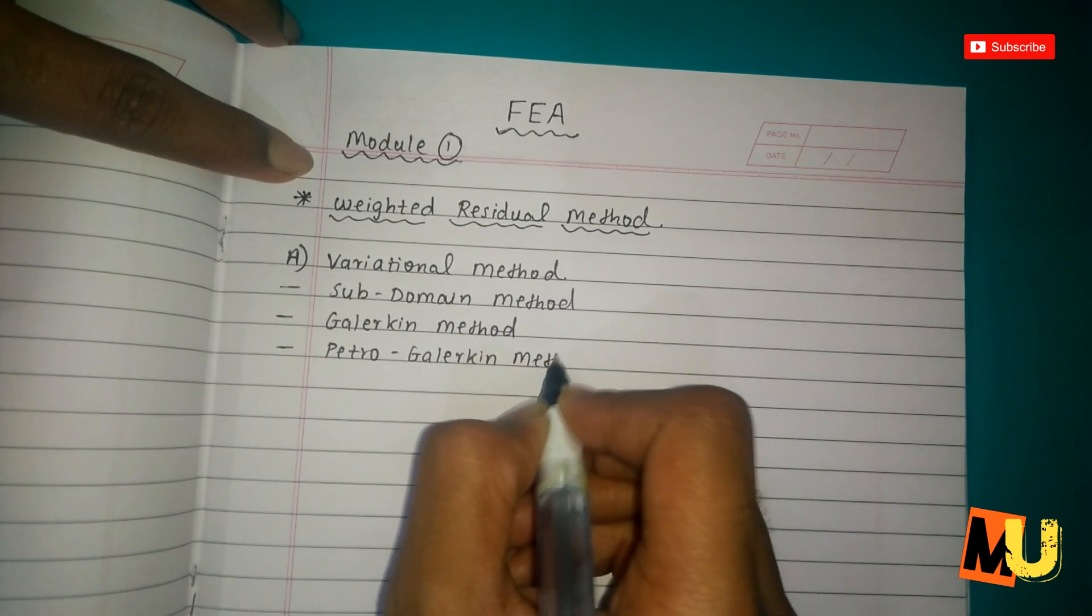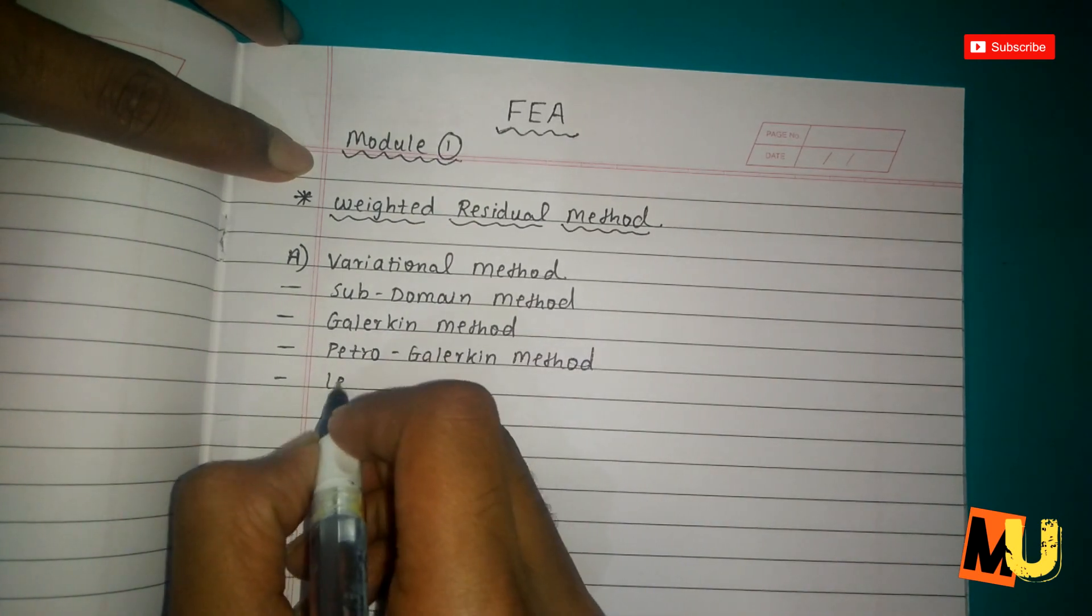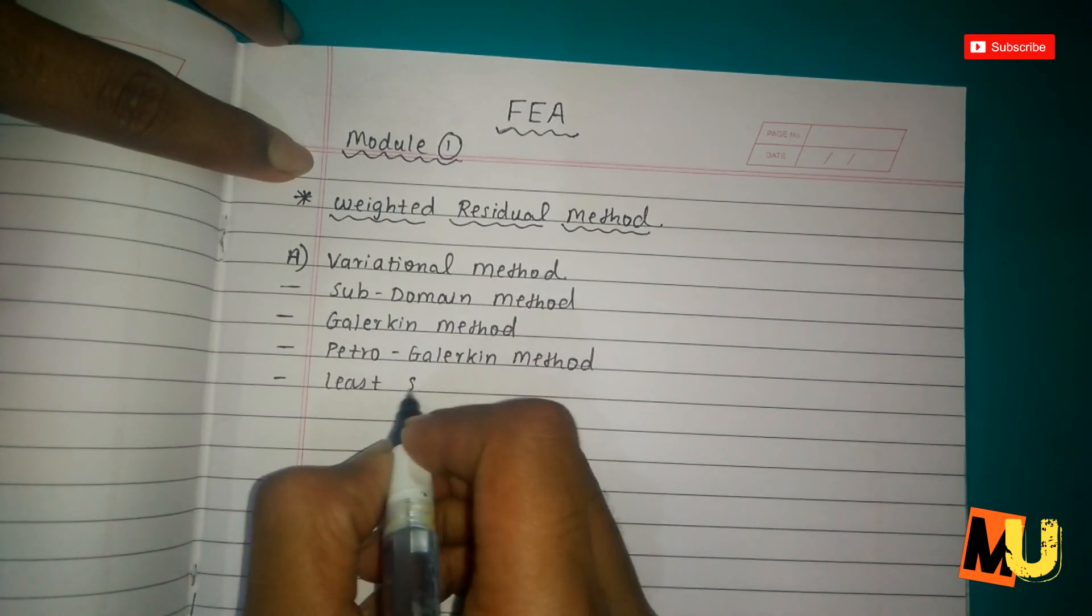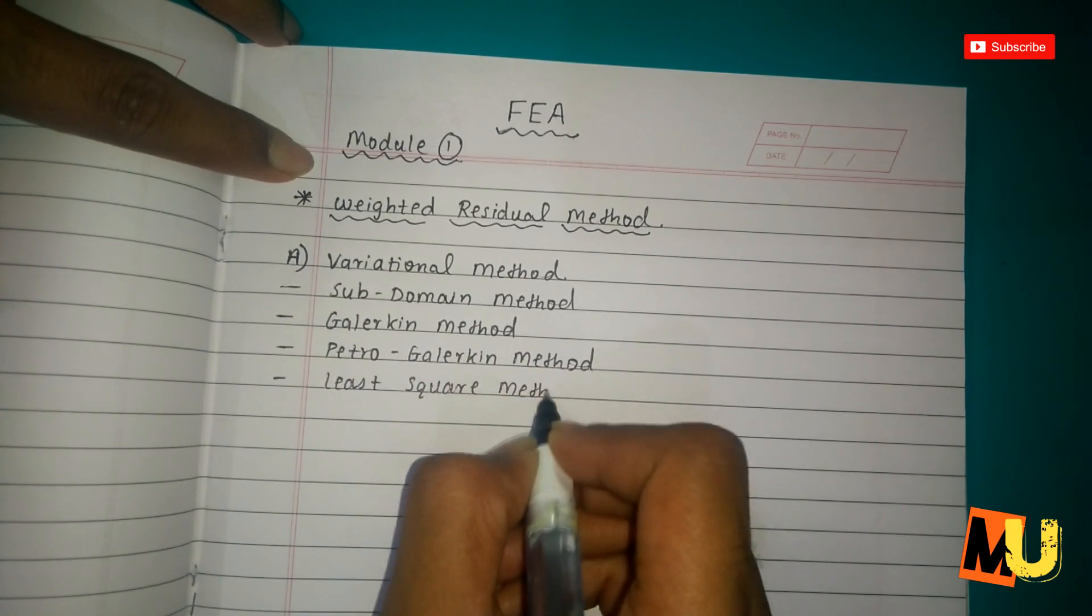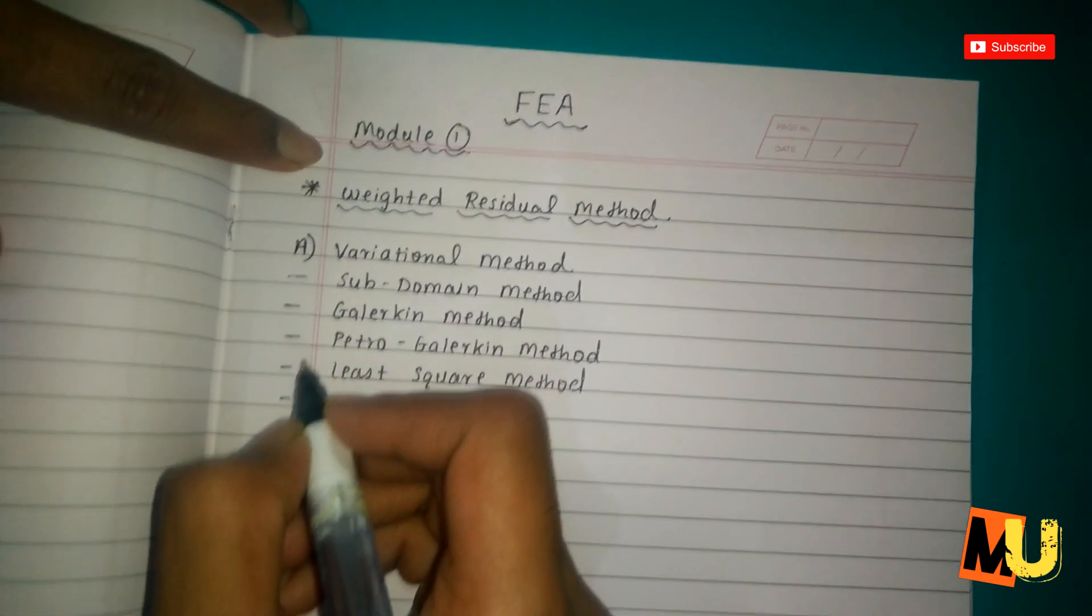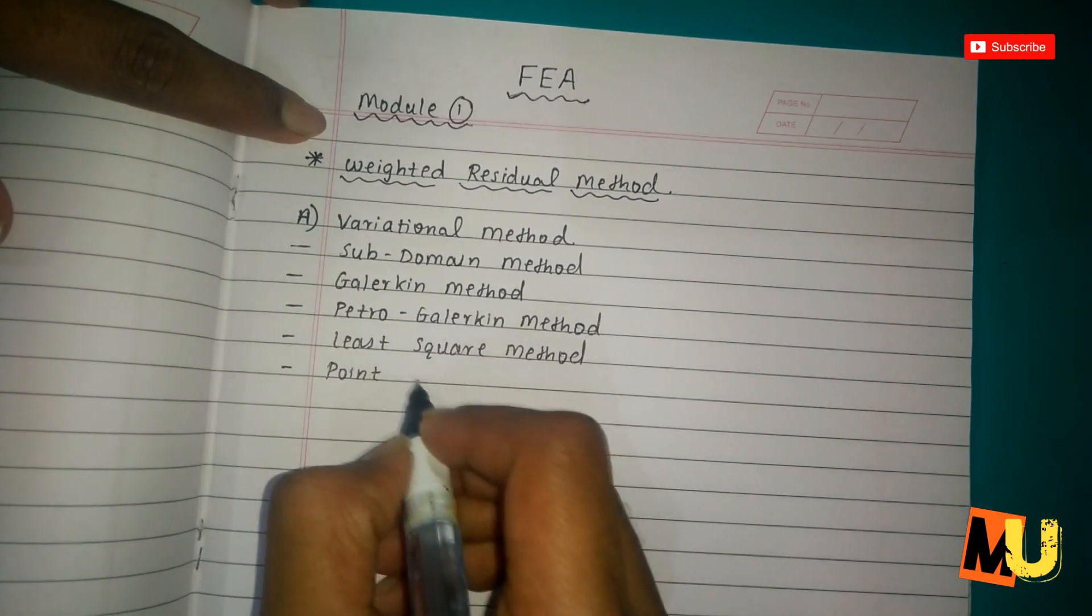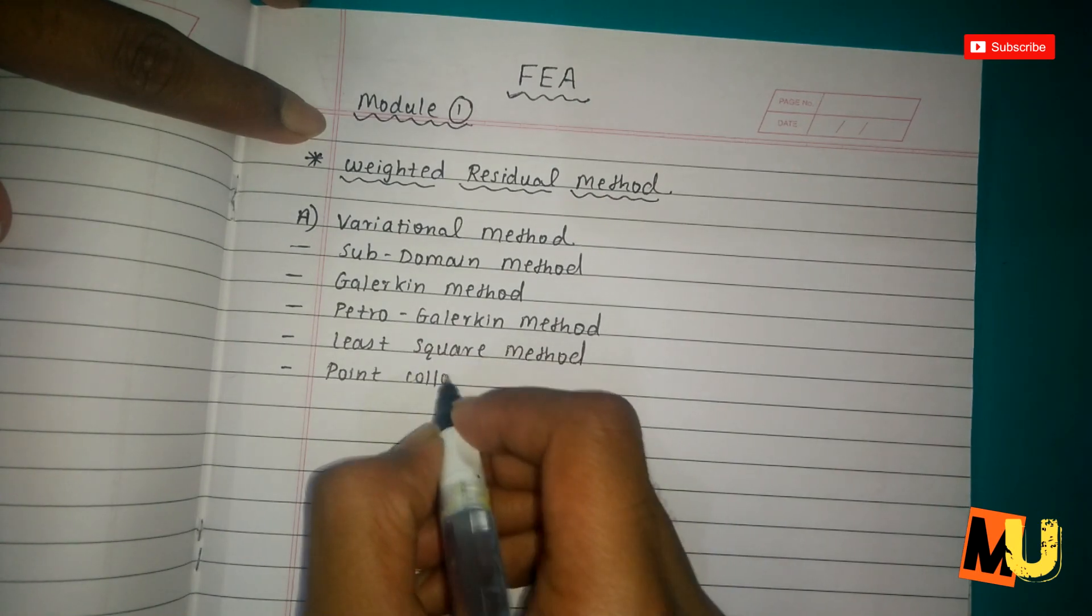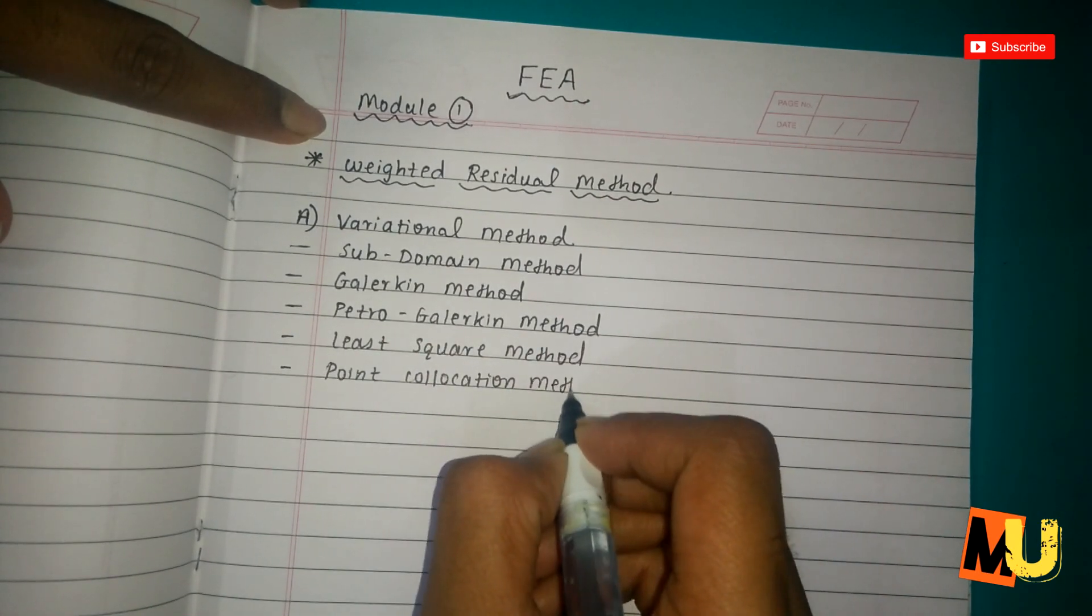then Petrogalerkin method, least square method, and point collocation method. These are the five types.